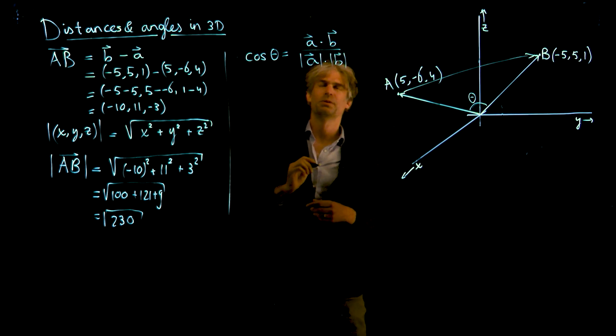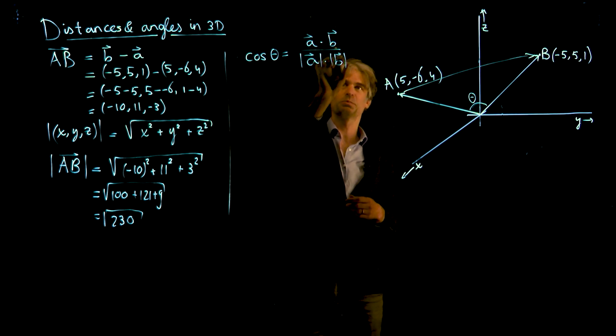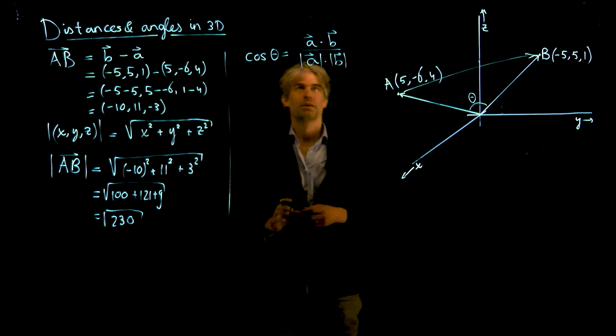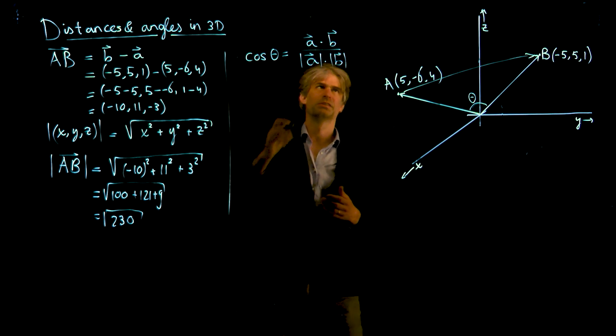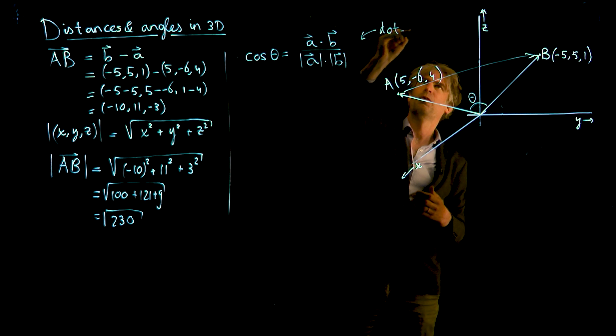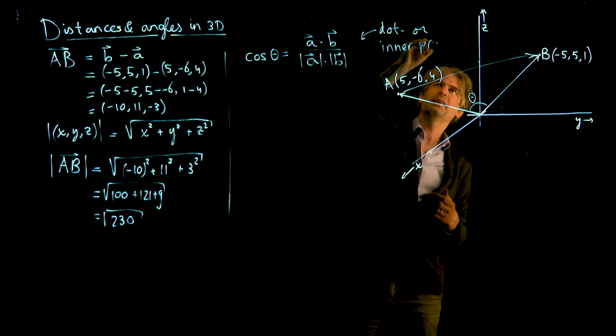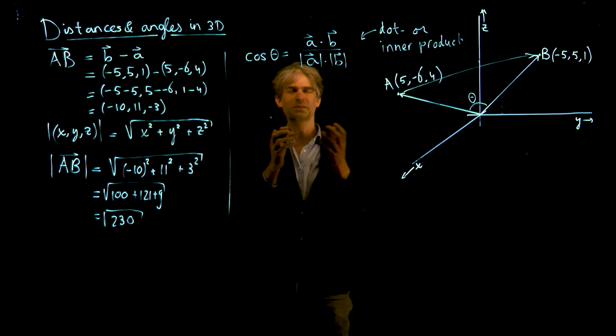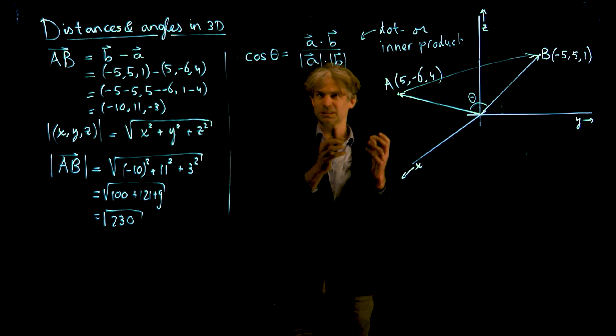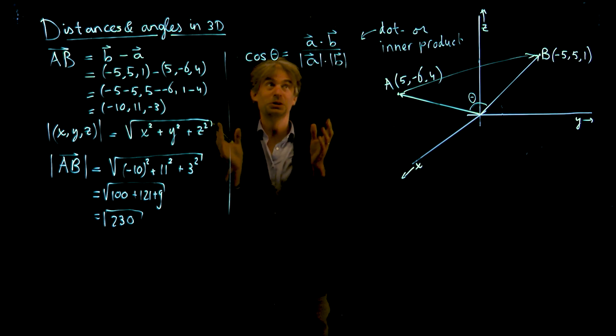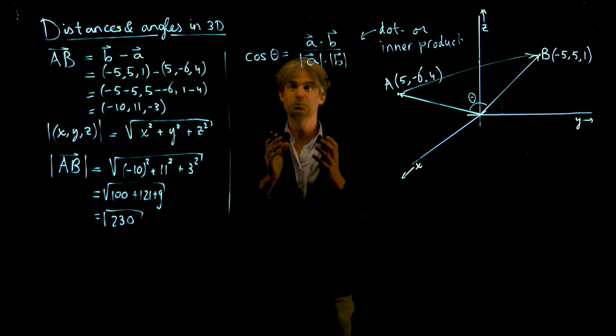If you notice, this dot here is not an inner product, it's just a product of two numbers, because the length is simply a number. This is really an inner product or dot product. Now the inner product is a funny product because you multiply two things and what comes out is not a similar sort of thing, but actually a number.